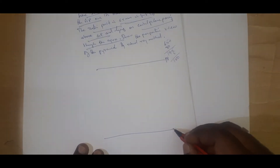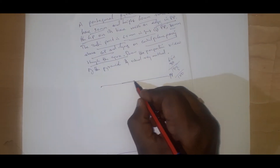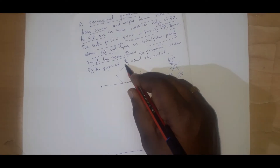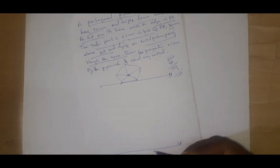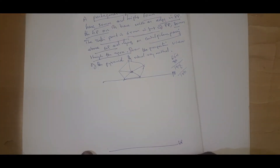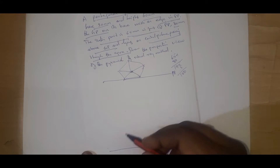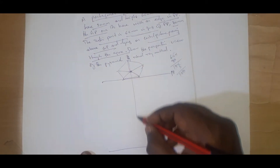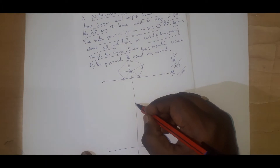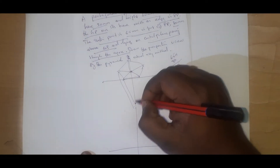The side is given as 30mm so we can draw the pentagon here. We draw the solid and then project everything downwards. The center plane is located here and the station point will be at this point. We can project everything now.